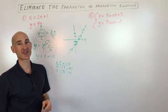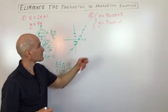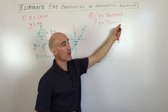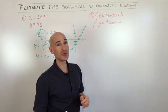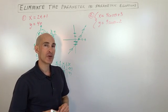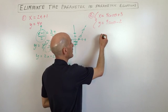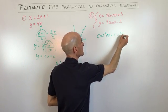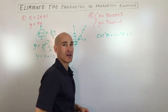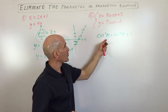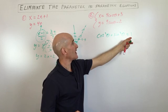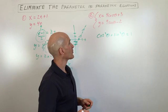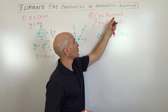We indicate direction with arrows along the line. For the second example, we have x equals 4 cosine θ plus 3 and y equals 9 sine θ minus 2. A quick reminder: recall the Pythagorean trig identity cosine squared θ plus sine squared θ equals 1. We're going to use this to eliminate the parameter θ.